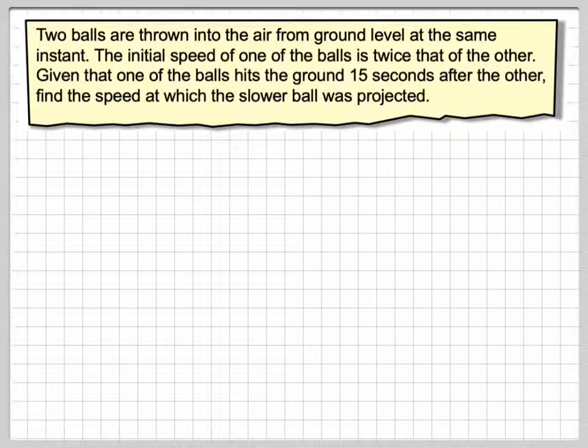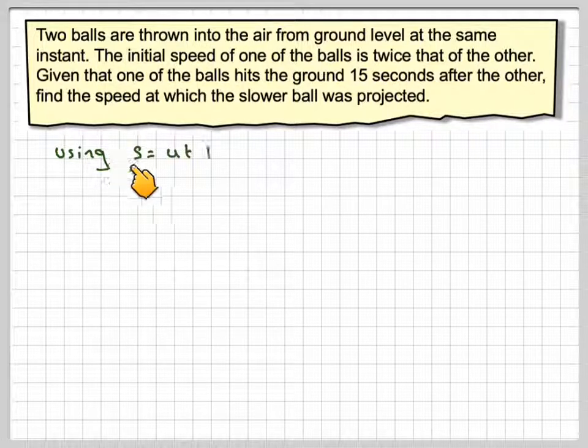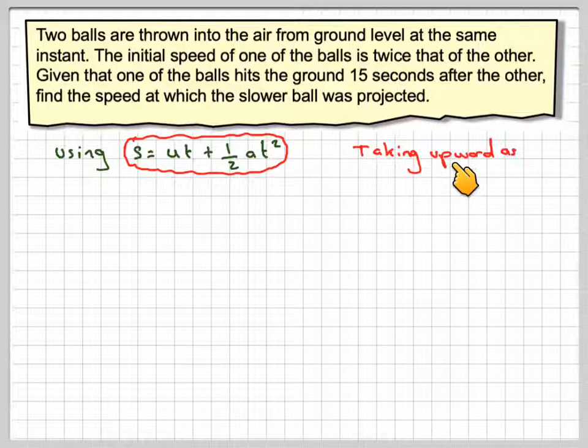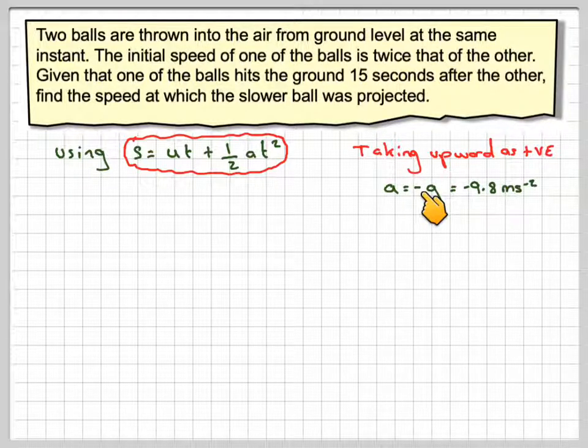Let's now look at the mathematics. So we're going to be using displacement is equal to initial velocity times time plus a half times the acceleration times the time squared. We're going to take upwards as positive, which means that a will be minus g, which is equal to minus 9.8 meters per second squared.